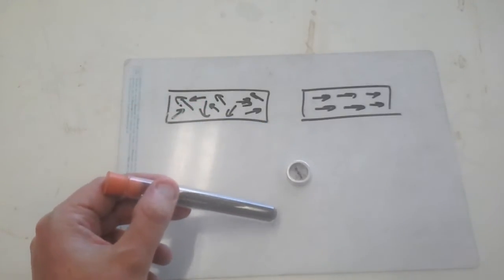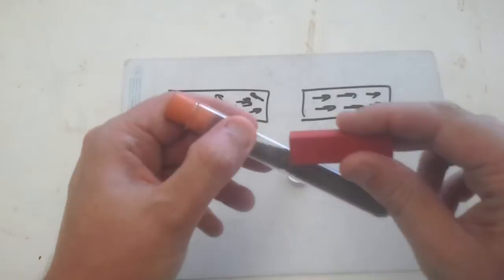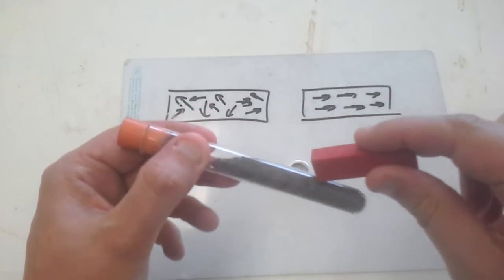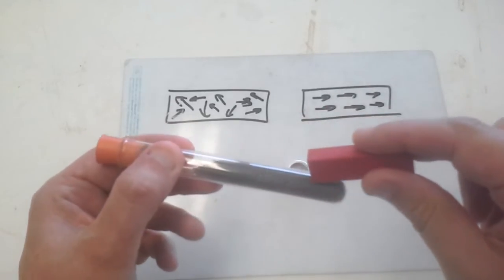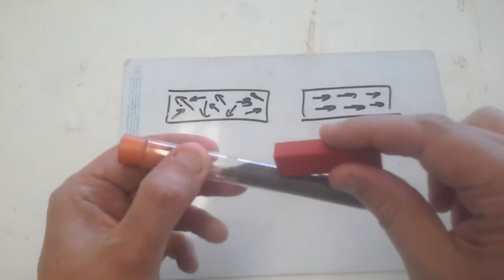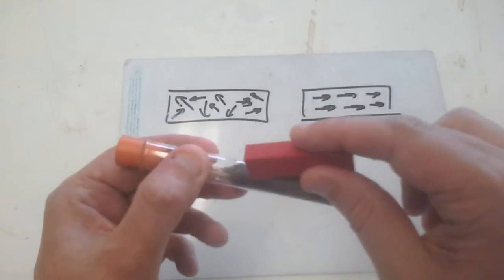But if I get my magnet and I rub my magnet against my iron filings, all the iron filings line up so that the magnetic fields are all in the same direction.